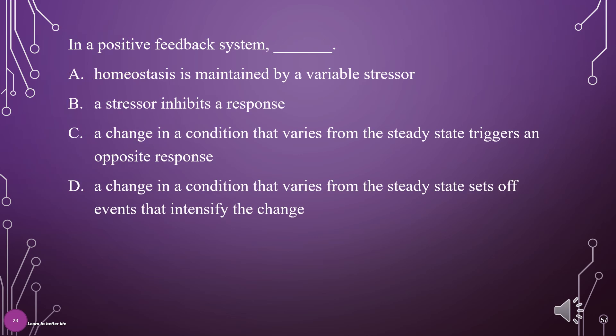In a positive feedback system, what? A. Homeostasis is maintained by a variable stressor, B. A stressor inhibits a response, C. A change in a condition that varies from the steady state triggers an opposite response, D. A change in a condition that varies from the steady state sets off events that intensify the change. The answer is D.